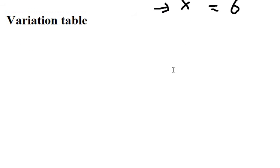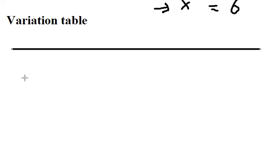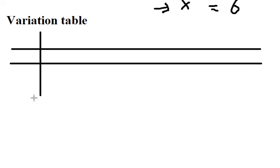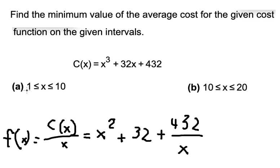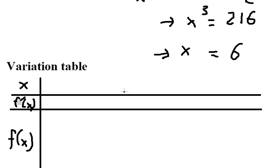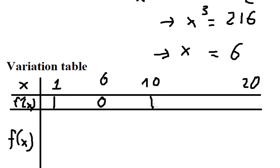Now we need to draw a variation table. Because we have two intervals, we go from 1 to 10 and from 10 to 20. When x equals 6, the first derivative equals zero.